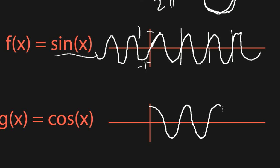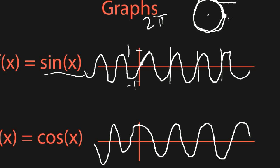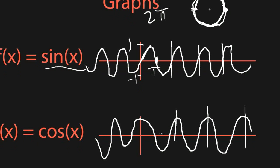Cosine looks slightly different from sine — the starting value is different, it's just a translation. That makes sense thinking about the x coordinate: it's at its maximum when you start at the end of the x-axis, then goes more negative, then more positive. When the sine value is 0, that's at π — halfway around the circle. At π, the x coordinate is negative 1, so that's when cosine is at its lowest. Sine and cosine are periodic with period 2π and vary between 1 and negative 1.